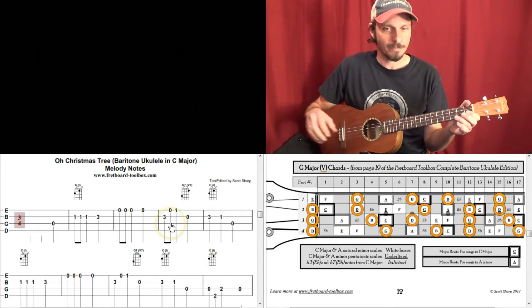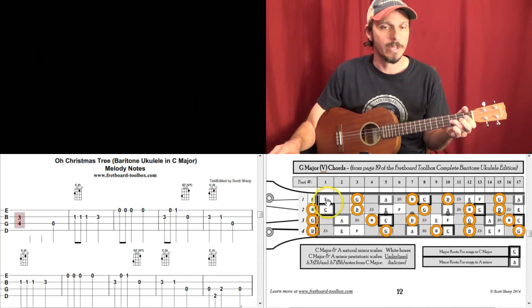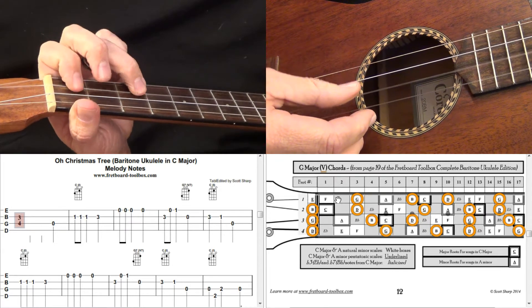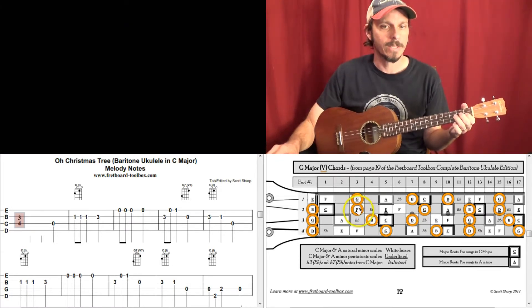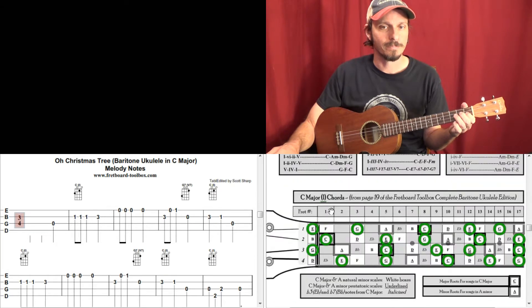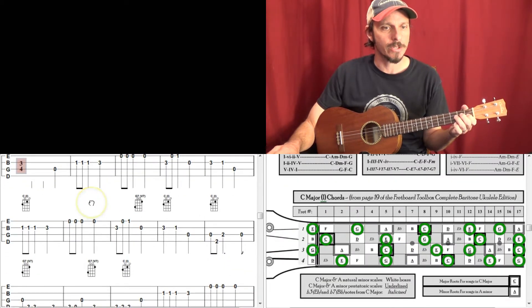Okay, so for that measure here, if we go 3, open, 1, okay, so that's 3, which is D, open is E, and then 1 is F. So it looks like this. Okay, and then we go back to 3, 1, which takes us back to the C chord. Okay, so the next four measures are just the same.